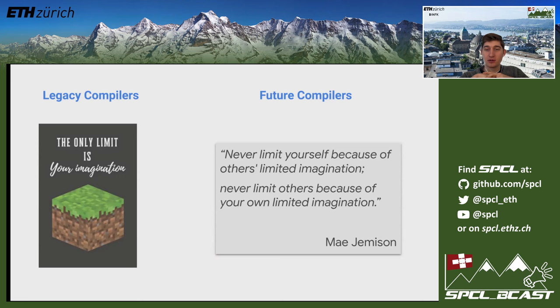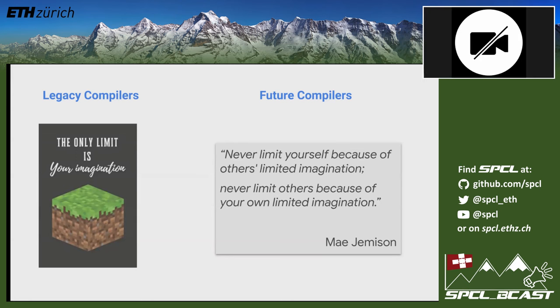We will now take a Q&A session. Torsten asks: the whole talk gave the vibe of aiming to replace performance libraries. Some would claim performance libraries were the major success in performance engineering — leading to Turing awards, MPI, BLAS, ATLAS. Do you really think we can completely replace those libraries with a compiled approach, or will they still play a role for kernels in the future?